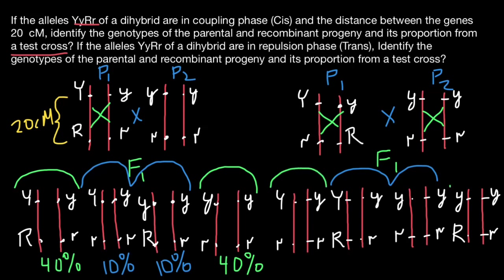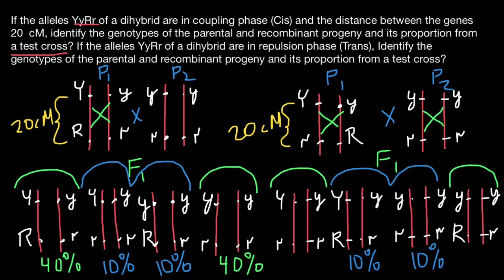These two are parental genotypes in the trans case. Just like in the first example, the distance between the two genes is 20 centimorgans, so in the progeny we see 10% of one recombinant variant, 10% of the other, and the remaining 80% split as 40% of each parental variant. This is how cis and trans positions of alleles affect genotypes in the F1 progeny. That's all for today — subscribe and see you in the next video. Goodbye!